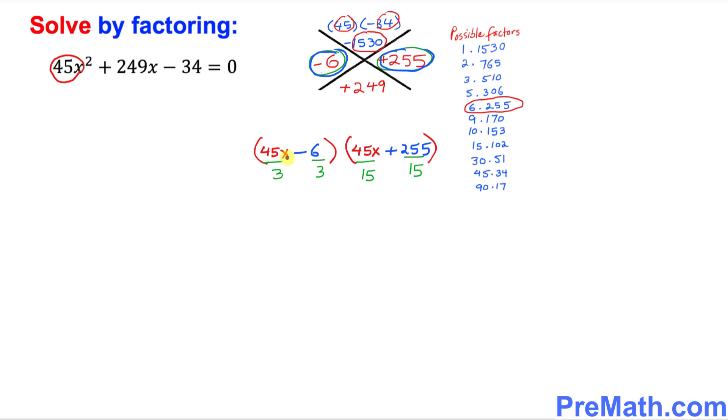So once you finish simplifying, this turns out to be 45 divided by 3 is going to be equal to 15x minus 2 times over here, that's going to be 3x plus 17. And these are our factors.